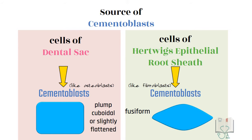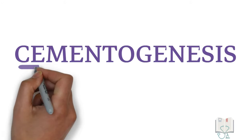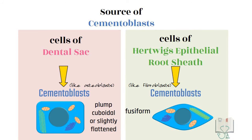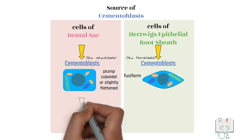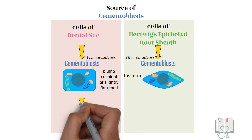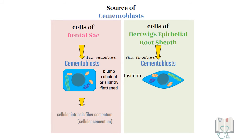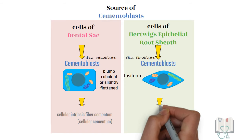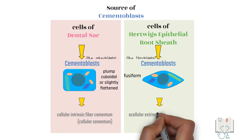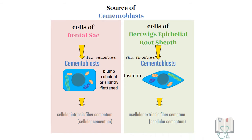Cementoblasts are mononucleate cells with abundant rough endoplasmic reticulum, Golgi apparatus, and mitochondria. Cementoblasts that differentiate from the cells of the dental sac are involved in the formation of cellular intrinsic fiber cementum, whereas cementoblasts differentiating from the cells of Hertwig's epithelial root sheath are involved in the formation of acellular extrinsic fiber cementum.